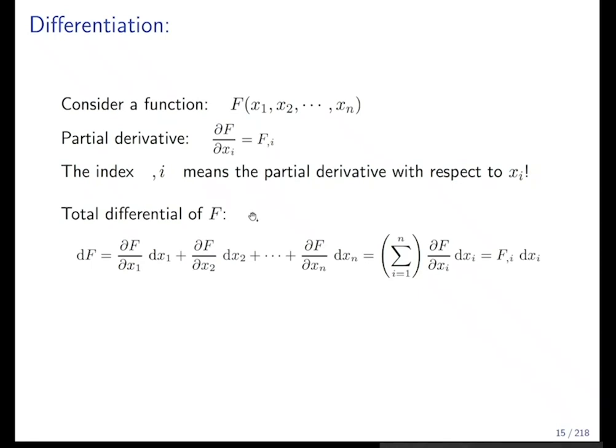Now, the total differential of f, as you know it from thermodynamics or from other courses, the total differential is the partial derivative with respect to the first times the differential with respect to the first, and so on. Again, this is a lot of writing work. In the index notation, it becomes even shorter than the summation. It's just f comma i dxi. This is the placeholder of the total differential.